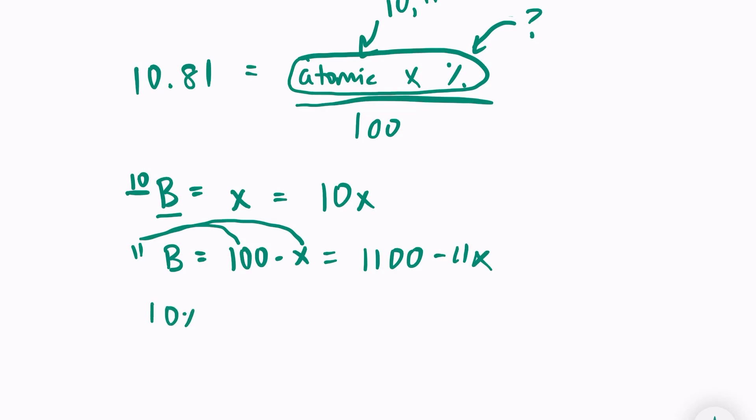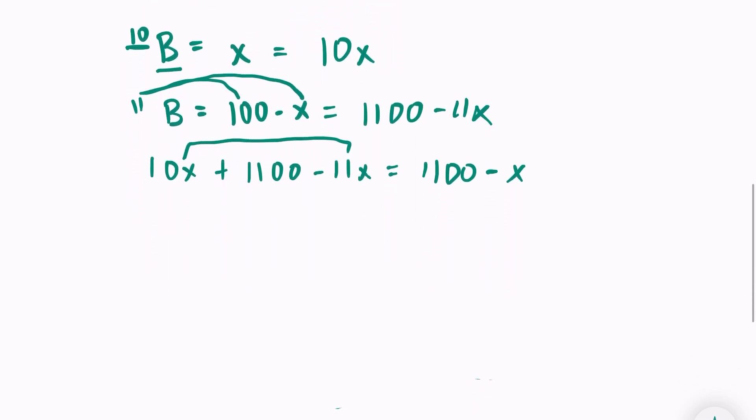So 10x plus 1100 minus 11x, which is equal to 1100 minus x, because I have 10x minus 11x. And we can put this into our formula.